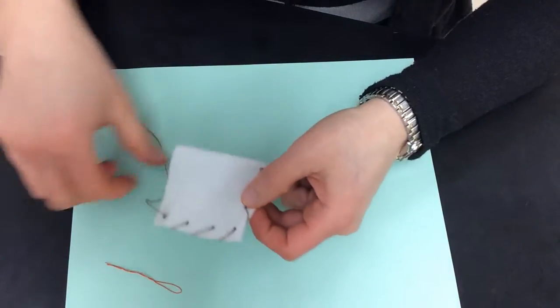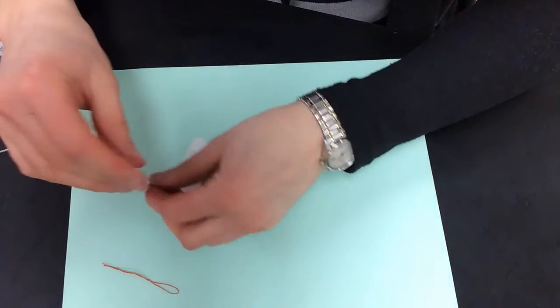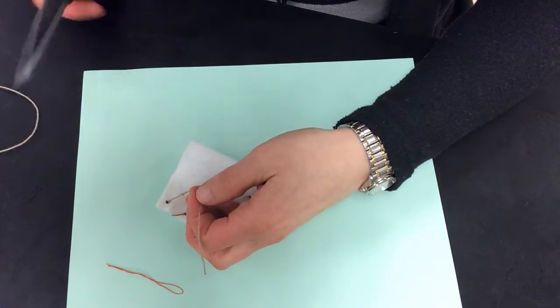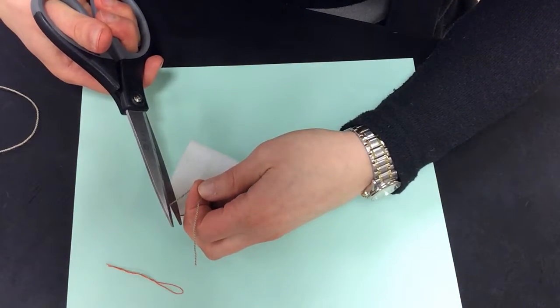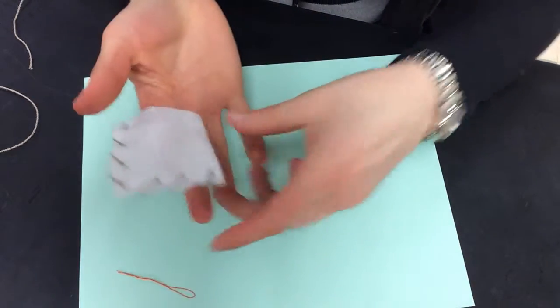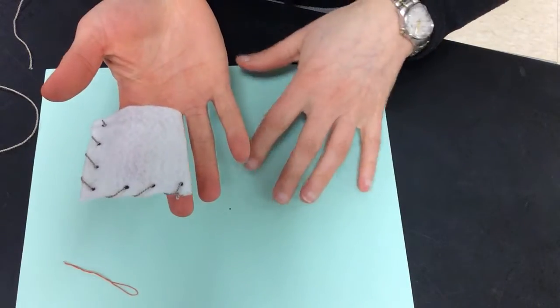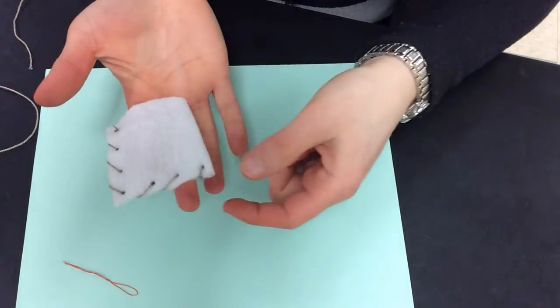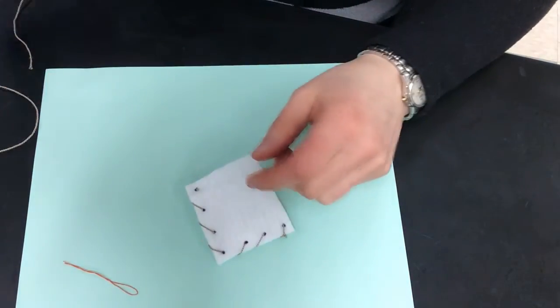And then I'm also going to cut off the tail over here. And now I have my finger puppet. It's kind of for a fat finger, but there we go.